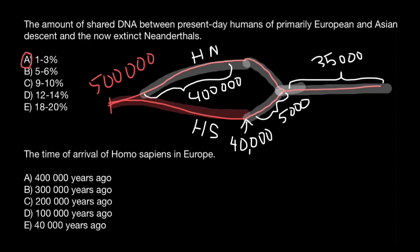Now we can choose the correct answer, which is answer E: Homo sapiens came to Europe about 40,000 years ago.